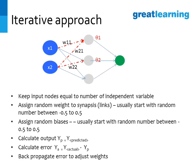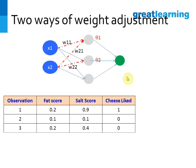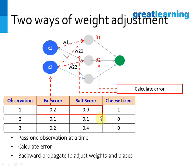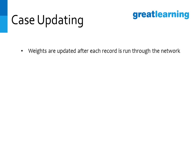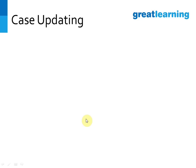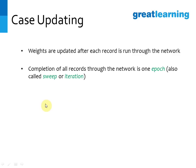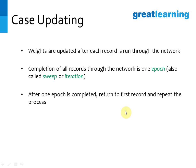There are two ways to do this. One way is to pass one record at a time, calculate the error, and then correct for that error — updating the biases (thetas) and weights after each record. This is called case updating, where weights are updated after each record is run through the network. Once all records have passed through, that is called one epoch — also called a sweep or iteration. After one epoch is completed, you return to the first record and repeat the process.